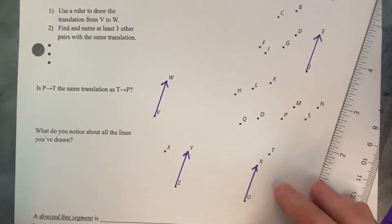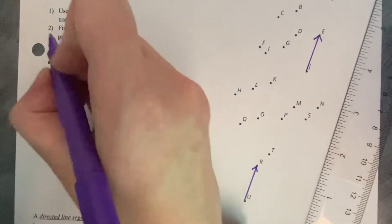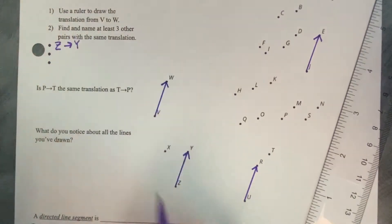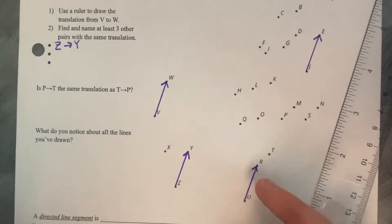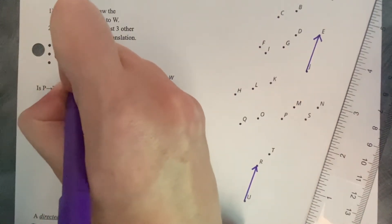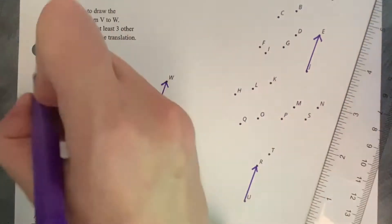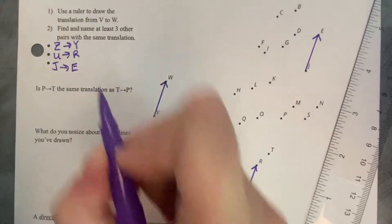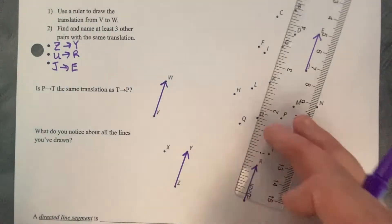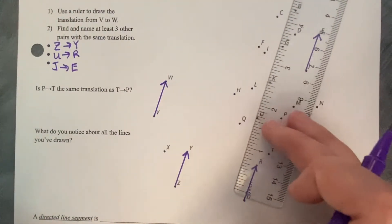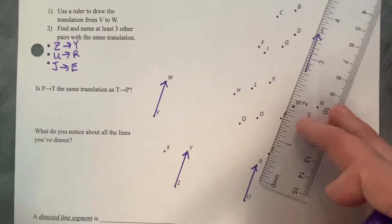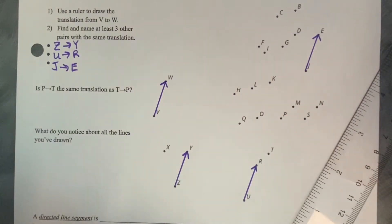A few others that I found: Z to Y is another translation that goes in the same direction. Another one down here is U to R. And another one over to the right is J to E. There are many more — Q to L, O to K — you can see several others across the diagram, so find as many as you can.